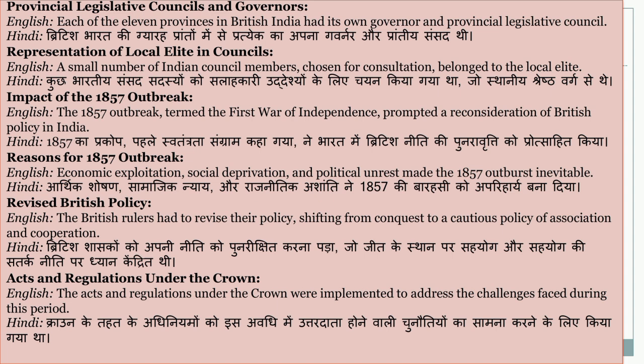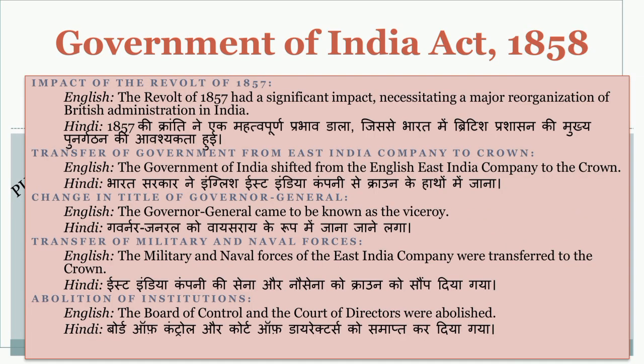The revolt of 1857 had a significant impact, necessitating a major reorganization of British administration in India. 1857 ki kranti ne ek mehetvapurn prabhav daala, jis se Bharat mein British prashasan ki mukhy punargathan ki avashyakta hui. The government of India shifted from the East India Company to the crown. Bharat sarkar ne English East India Company se crown ke haatho mein jana.